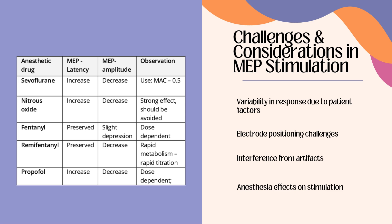While MEP is a powerful stimulation tool, many factors can affect the accuracy of the results. Variability in responses due to patient factors such as age, medication, or fatigue following surgeries can affect the results. Additionally, small variations in electrode positioning can alter MEP responses. Interference from artifacts, also known as signal noise, can affect the interpretation of MEP responses. Because of this, the interpreter needs to be highly skilled to ensure that there are no false positives or false negatives.